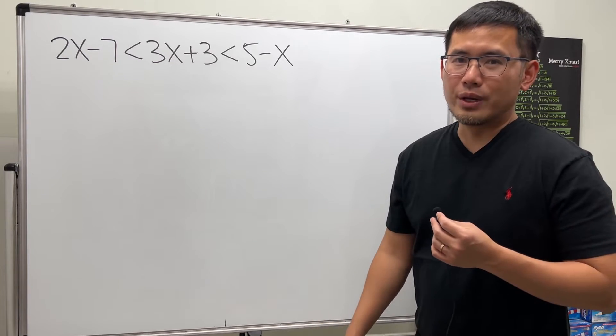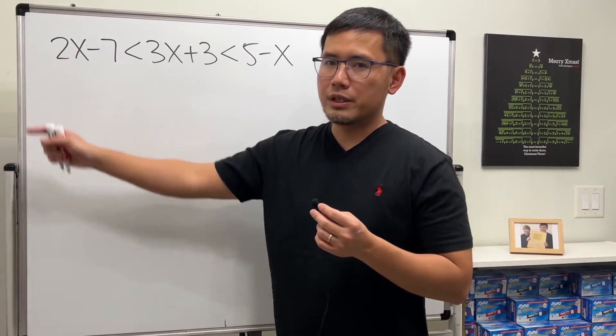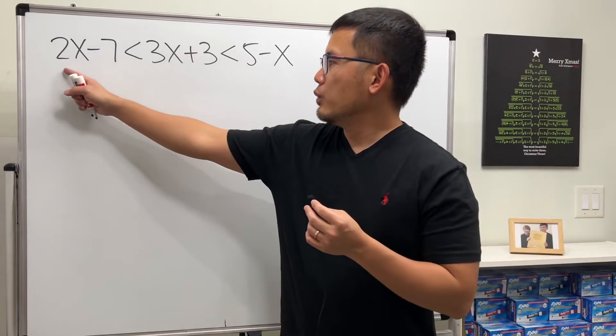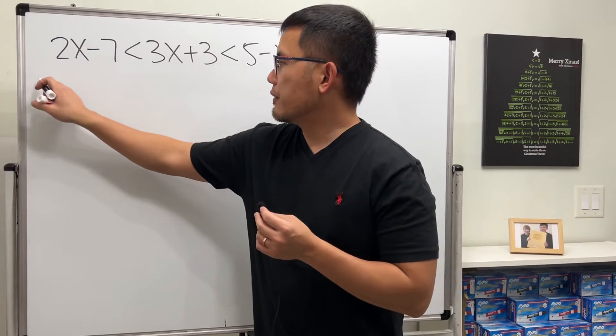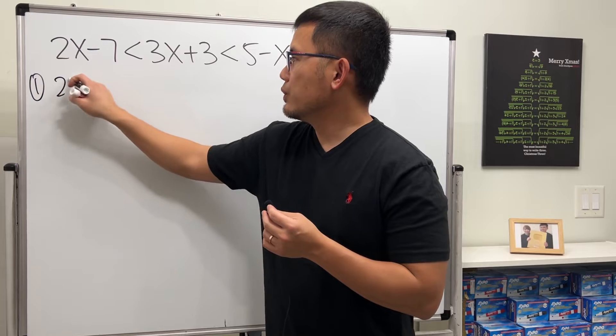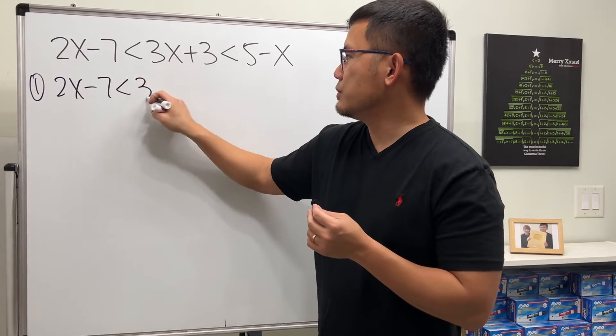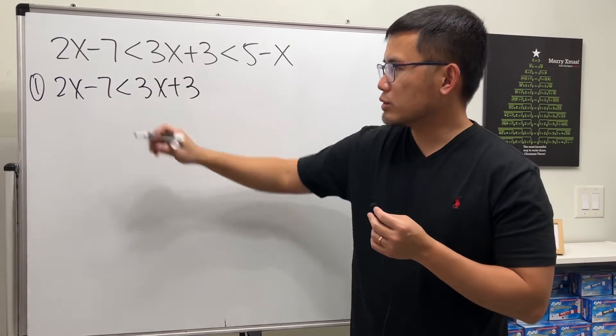But I think I'll show you guys a safe way. When we have this inequality, this means that we can put this down first. The first condition is we want 2x minus 7 is less than 3x plus 3. So that's what we want.